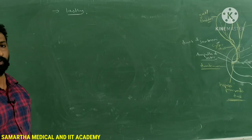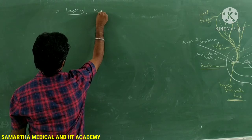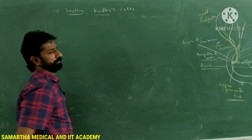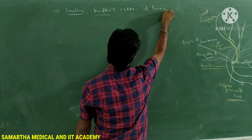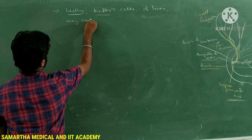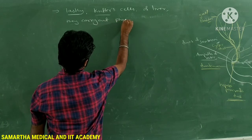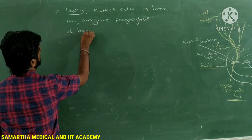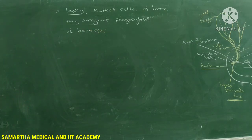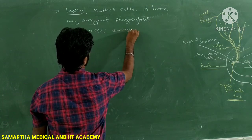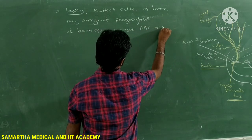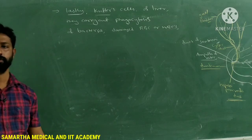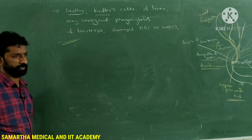Lastly, the liver also carries out phagocytosis by the specialized Kupffer's cells present in the sinusoids. They carry out phagocytosis of bacteria that enter the liver, as well as damaged RBCs and WBCs. That concludes today's class on the functions of the liver.